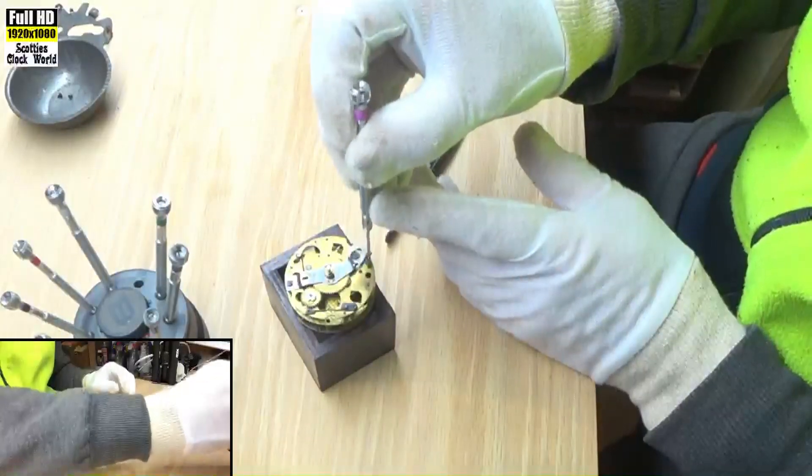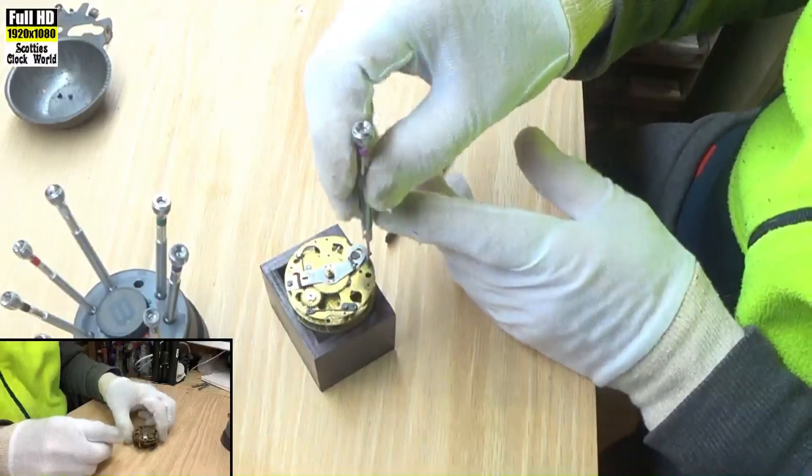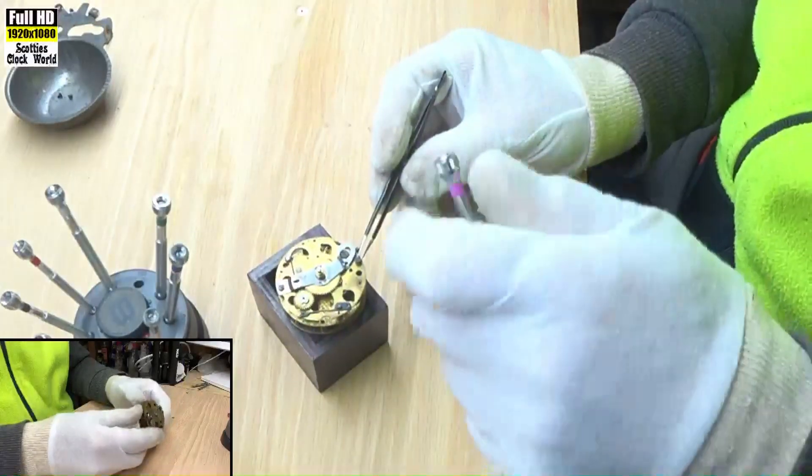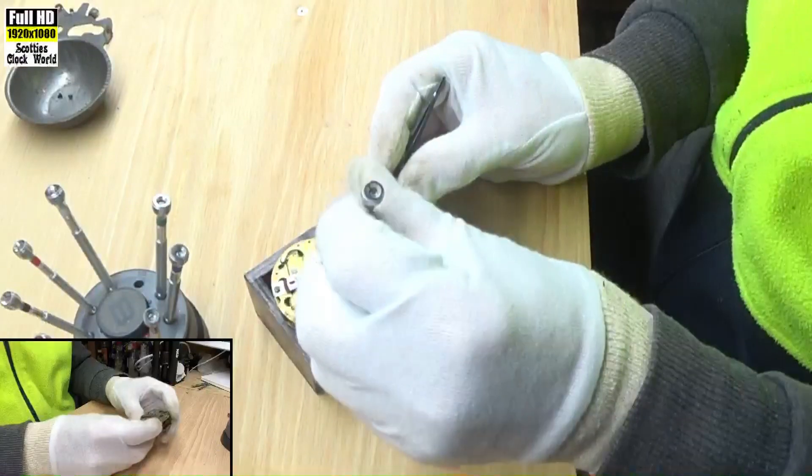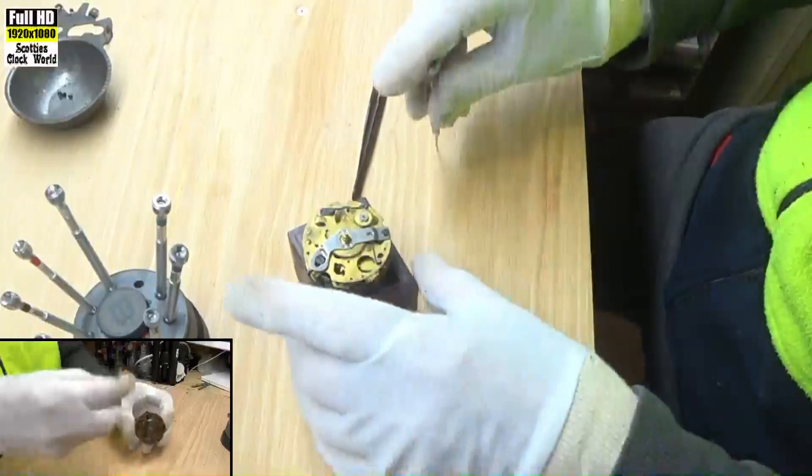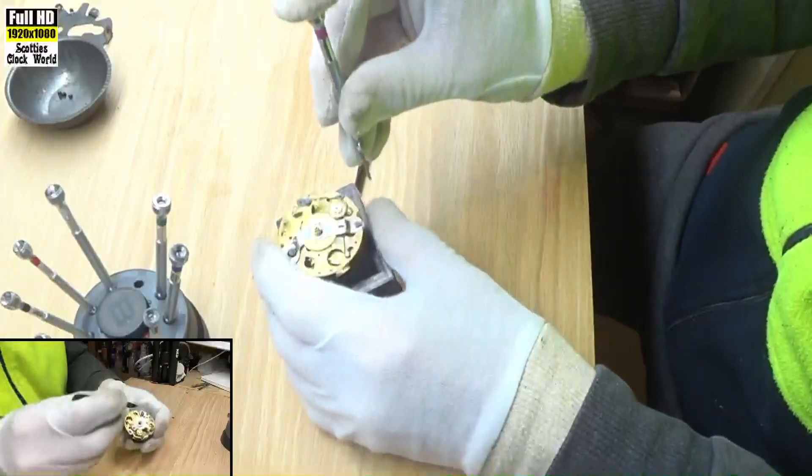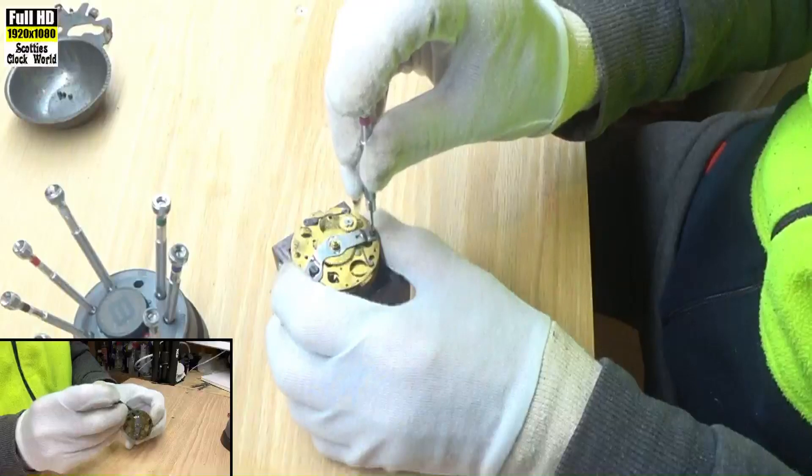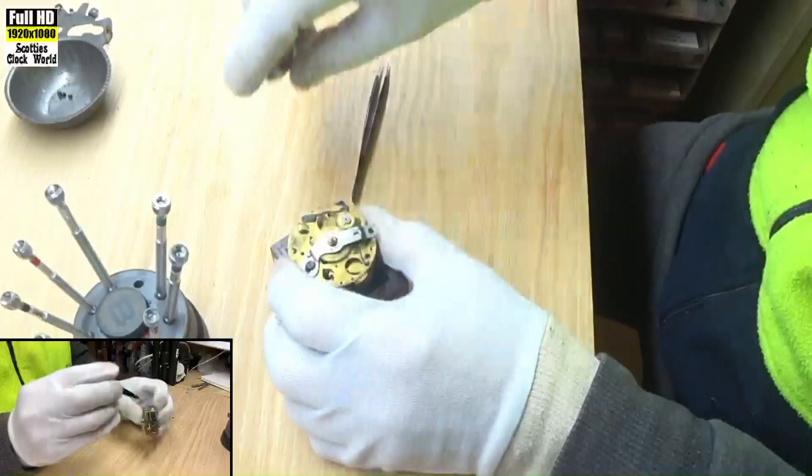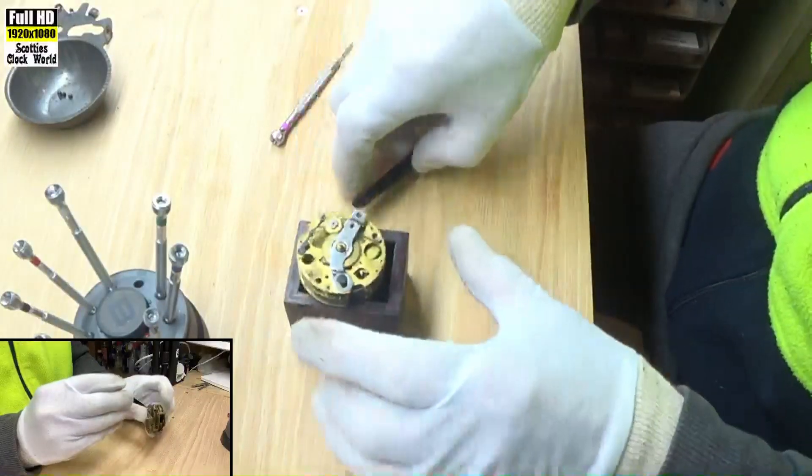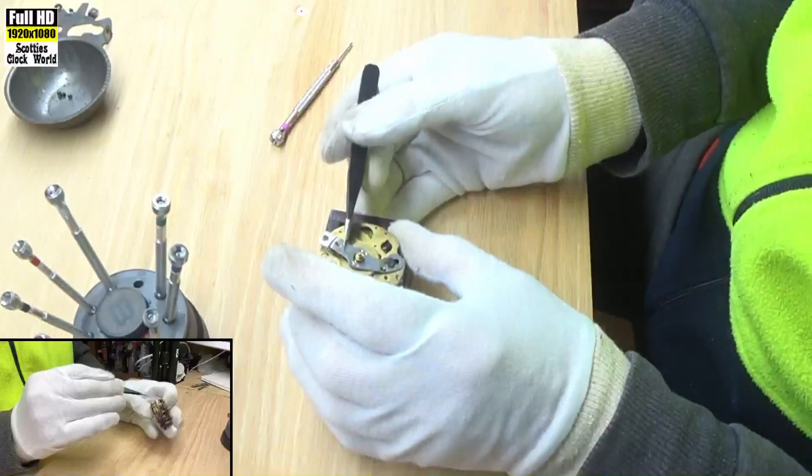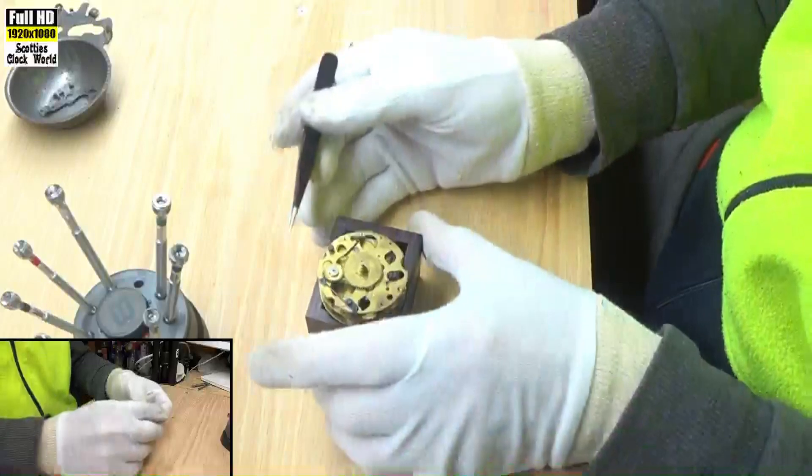Let that screw loose. Not quite. Tiny bit more. Put it in the dish. Now this one. It's come out. That's part of the striking mechanism. We'll take that off.